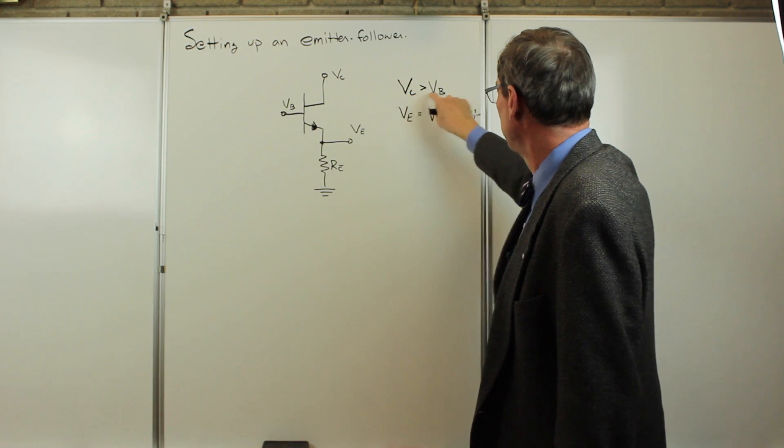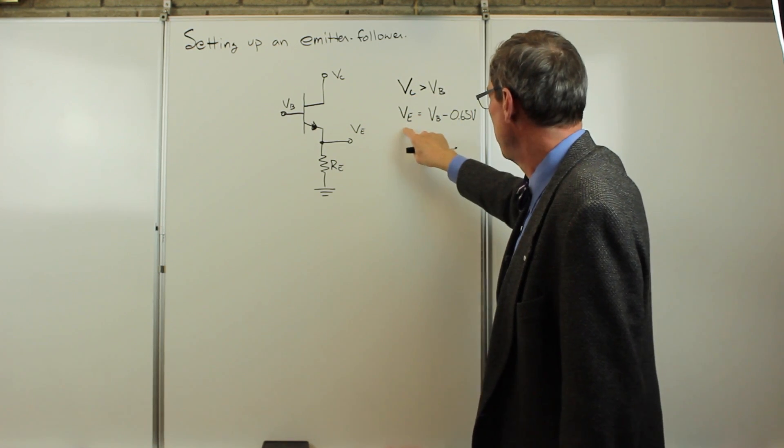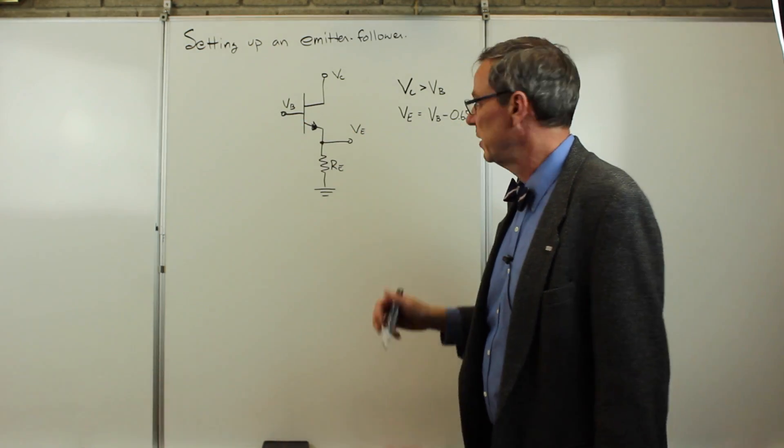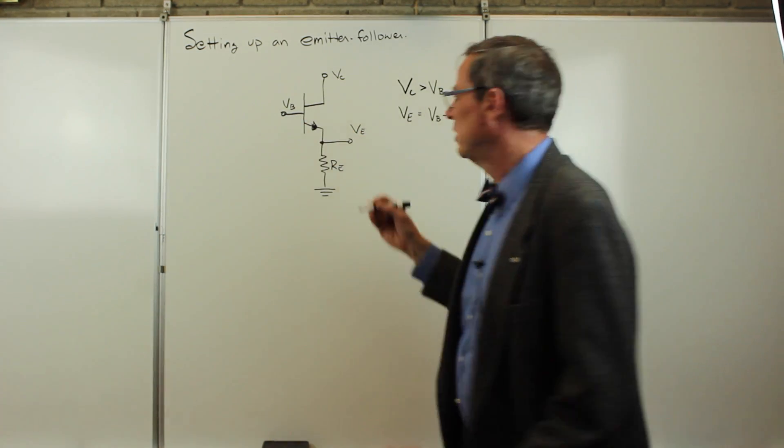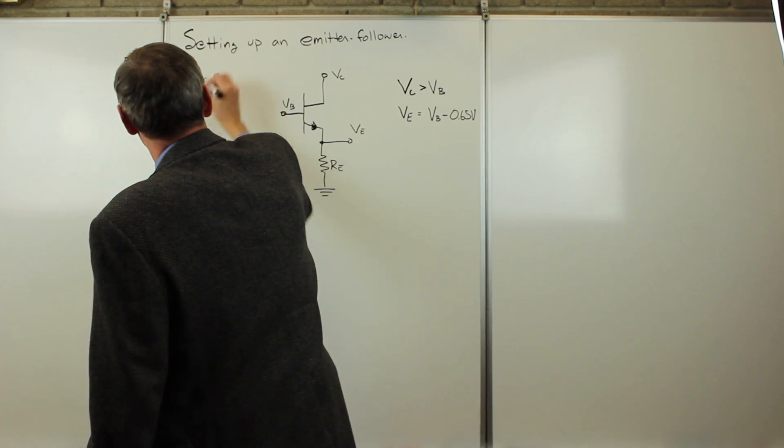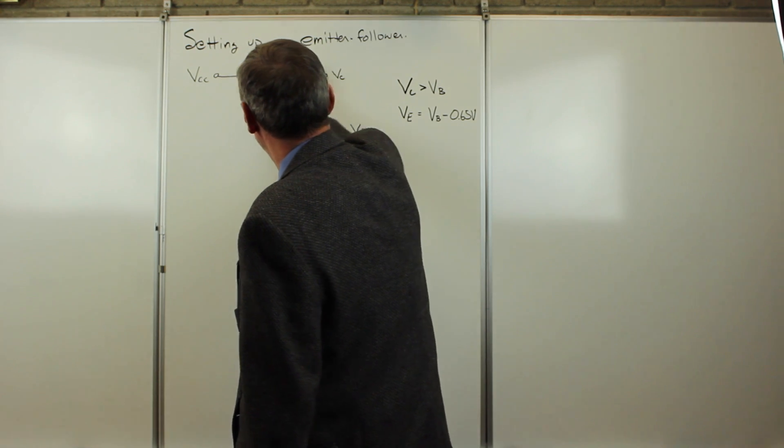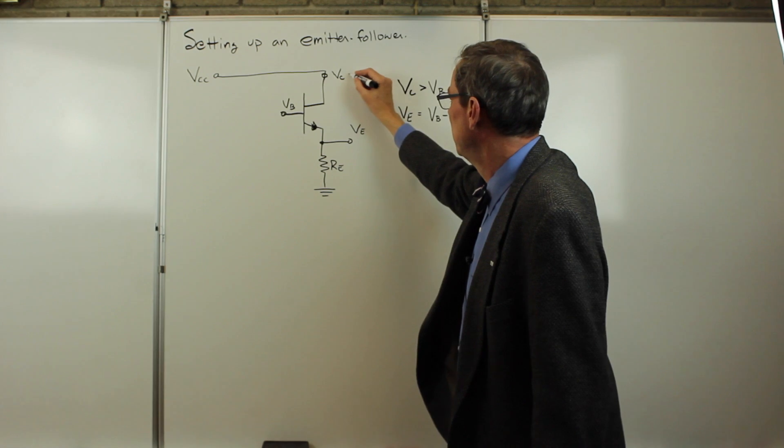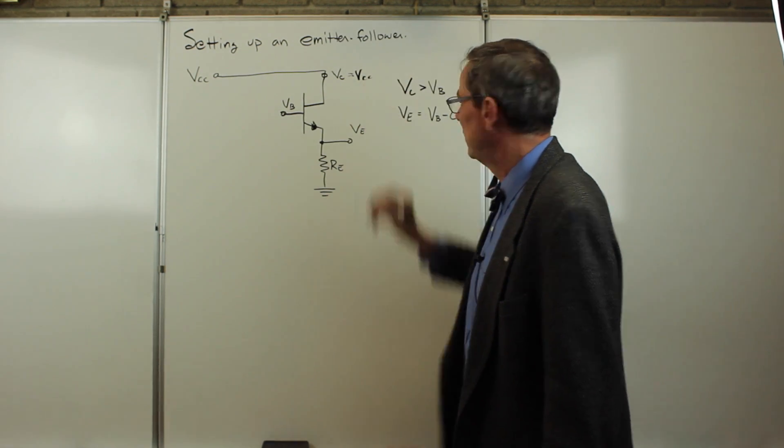For biasing, we need the collector voltage bigger than the base voltage. When we do that, the emitter voltage will be a diode drop below the base voltage. We're going to assume we have a single DC power supply called VCC, and I'm going to hook VCC directly to the collector, so VC equals VCC.